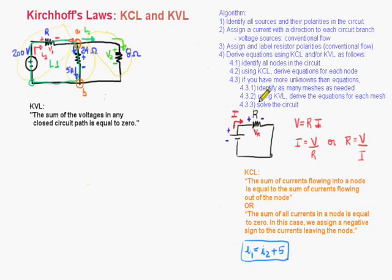And like here says for 3.2, using KVL derive equations for each mesh. So our first mesh here is L1, and L1 is our first mesh in this circuit.